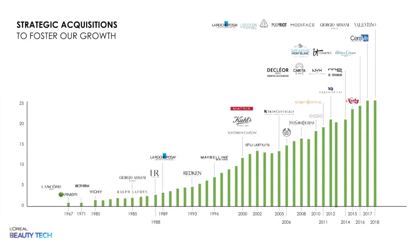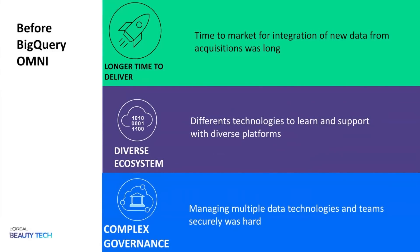Before Omni, we had almost three main challenges. One was the time-to-market delivery — it was very long and very difficult. The second was the diverse ecosystem we had to manage because of the different technologies coming from different companies. And at the end, the complexity of governance in terms of multiple technologies, multiple languages, and securing everything in one place.